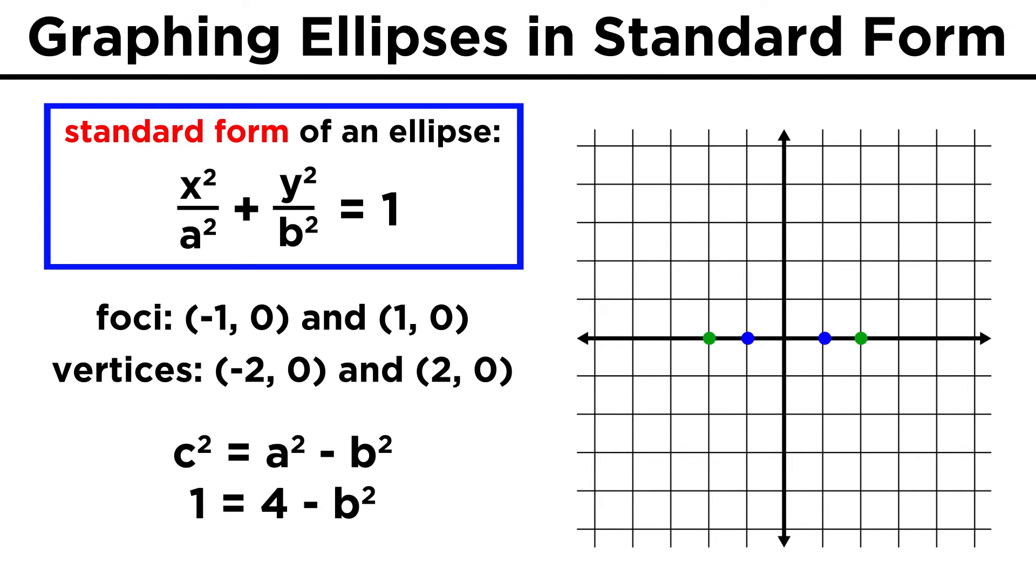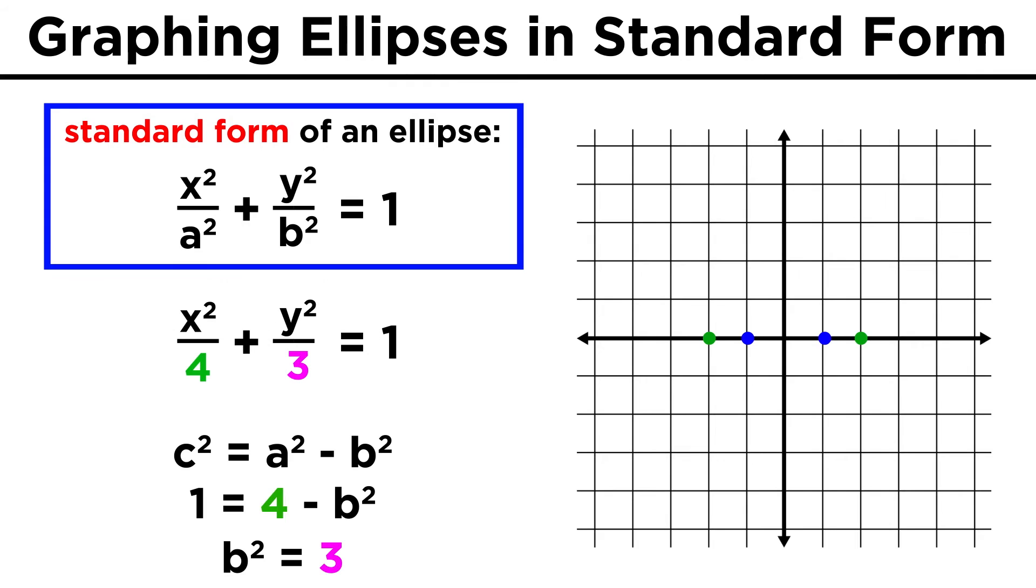It will then be true that one equals four minus B squared, or B squared equals three. Then we just put A squared and B squared into the standard form, and there's our equation.